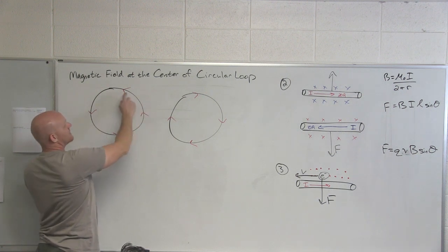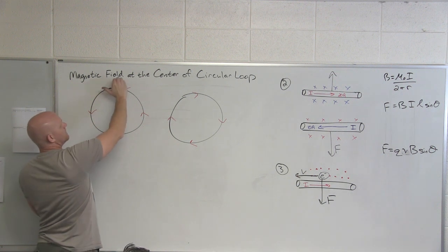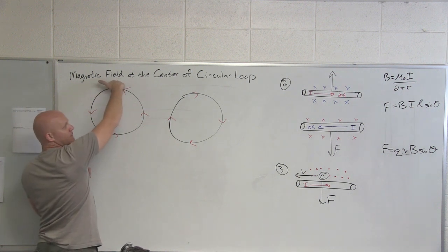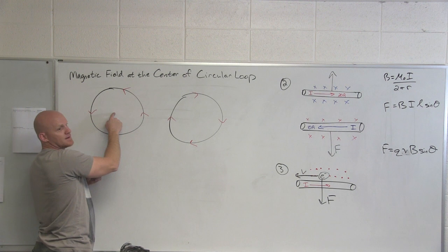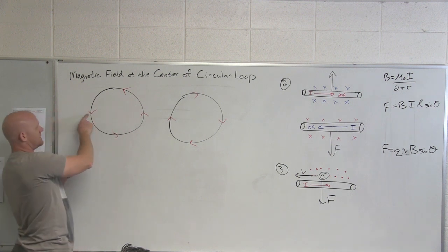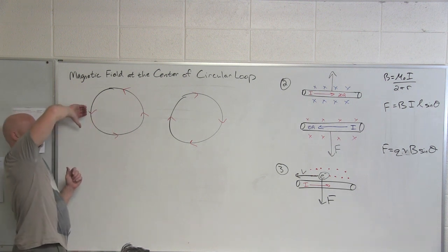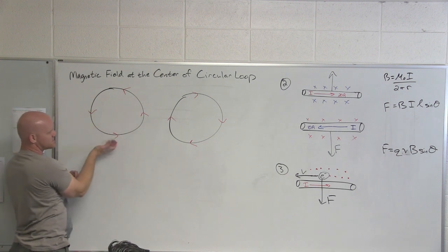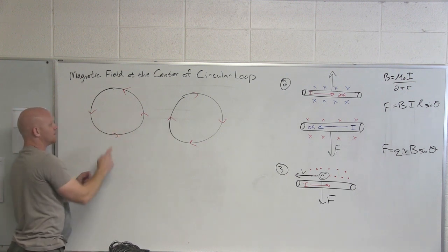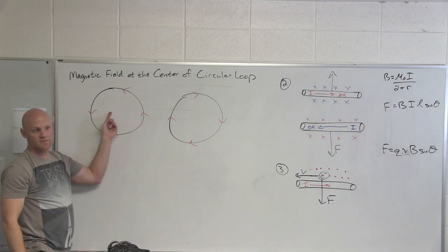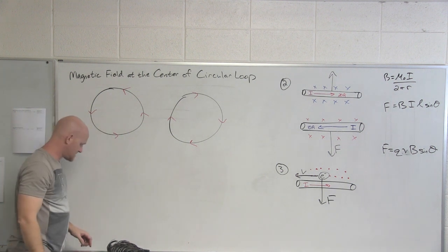Now if I do the same thing at the top of the loop, the current points to the left and where would the magnetic field point at the center of the loop? Out of the page. What about here? Current points down and out of the page. So you find the current's gonna have to point out of the page here in this case.